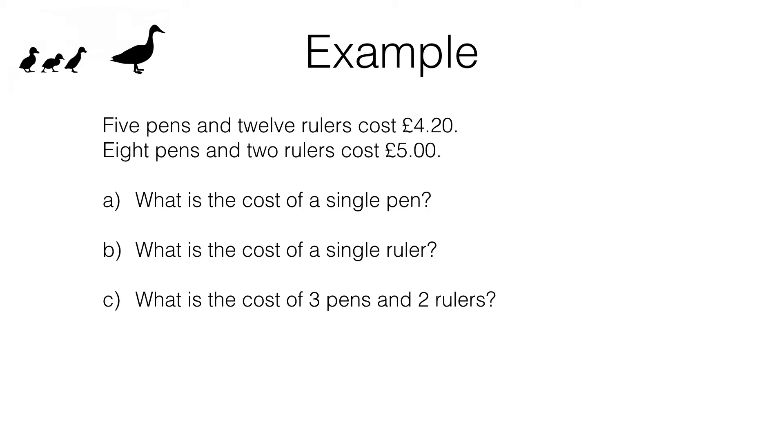Well one problem we have is that it's difficult to compare these two lines because we've got different numbers of pens and different numbers of rulers. However what I can do is realize that if eight pens and two rulers cost five pounds, then 48 pens and 12 rulers must cost 30 pounds.